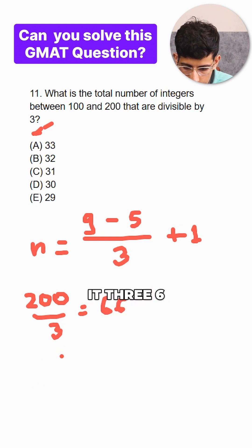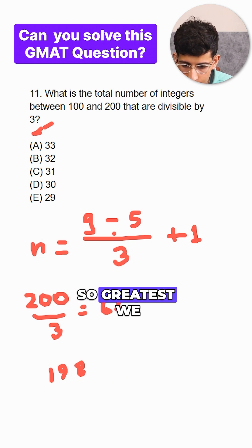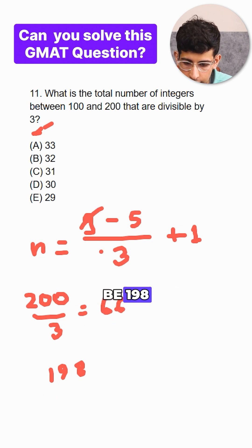So you multiply it, 66 times 3, 1 carry. So 198 is the biggest number. So greatest we can substitute to be 198.